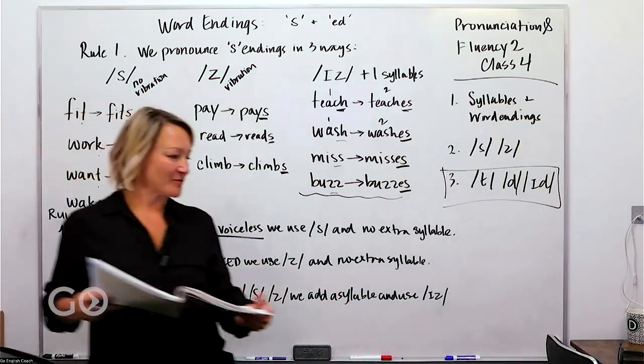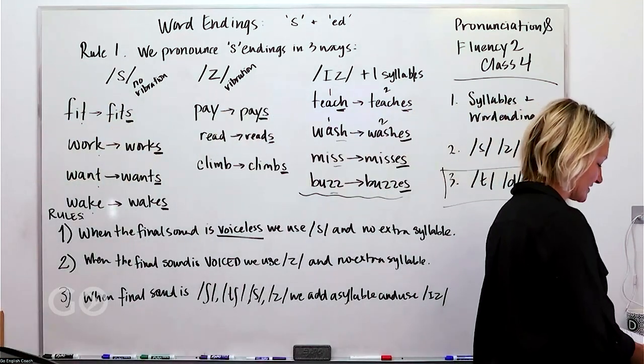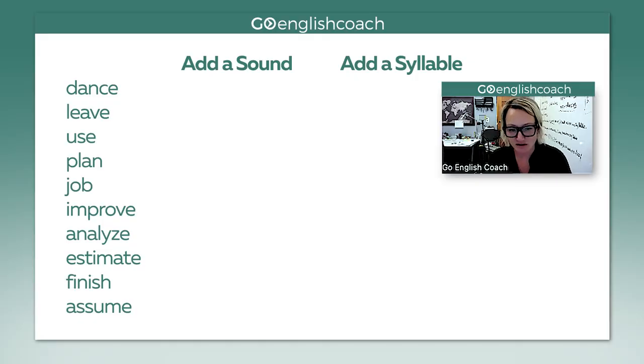Here we are, you guys. So we've got exercise two here. We've got the words here, one through ten. We are deciding if it adds a sound, only a sound, or if it adds a syllable. So dance, dances. They put it here, it adds a syllable.